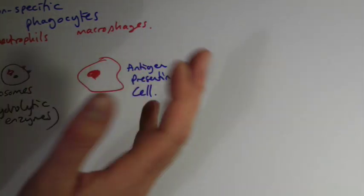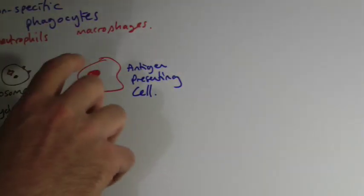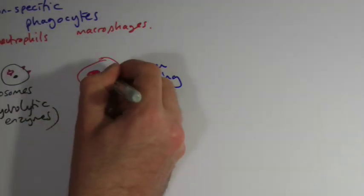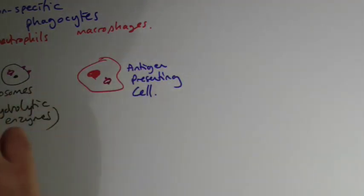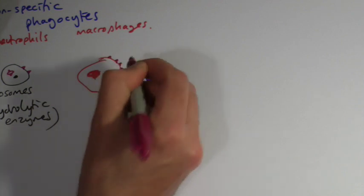But some of these macrophages can act as antigen presenting cells. And what they will do is, their specific role is they will destroy these pathogens when they've engulfed them, and they present them out on the surface of their cell.